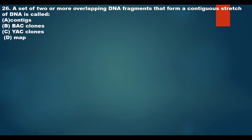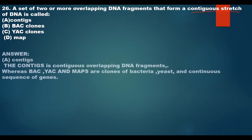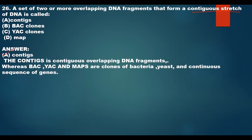A set of two or more overlapping DNA sequence fragments that form a contiguous stretch of DNA is called a contig. The contig is named for 'contiguous overlapping DNA fragments.' BAC clones, YAC clones, and MAP clones are non-overlapping DNA fragments used for mapping, whereas contigs are overlapping DNA fragments.